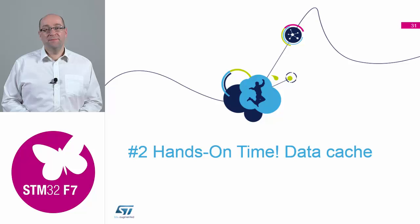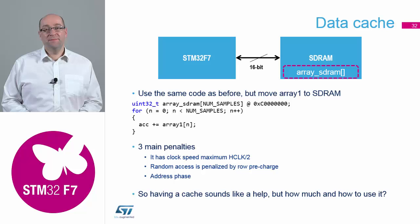We're going to look at some examples on using the cache and the benefits of different methods of connecting device memories to the core. We're going to take the same simple loop we were running earlier and allocate it into SDRAM using the linker file — placing it at 0xC0000000, which puts us in one of the SDRAM banks on the device.